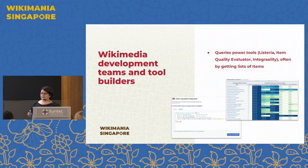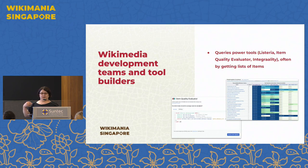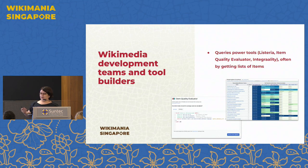Last but not least among users, there are Wikimedia development teams and tool builders who build tools that heavily rely on queries to Wikidata. For example, the item quality evaluator lets you write a SPARQL query to get a list of items — like Star Trek episodes — and then gives you the quality level of each item so you can improve the worst ones. Or Integrality, which gives you dashboards for Wikidata items and their completeness, helping you find areas where data is missing.